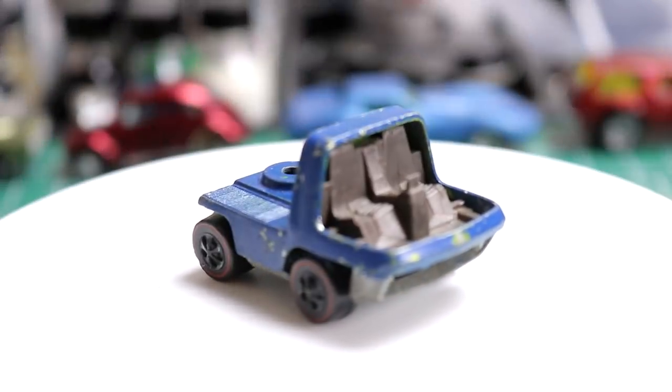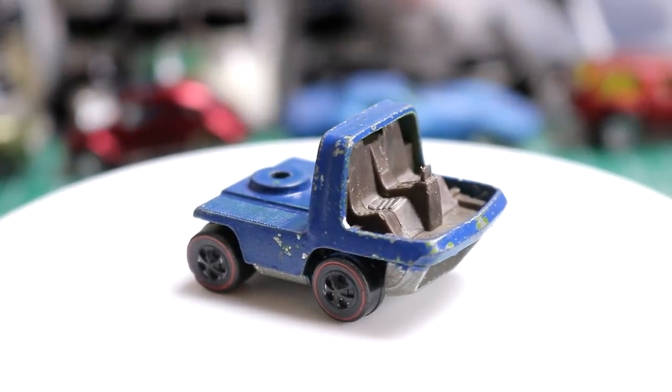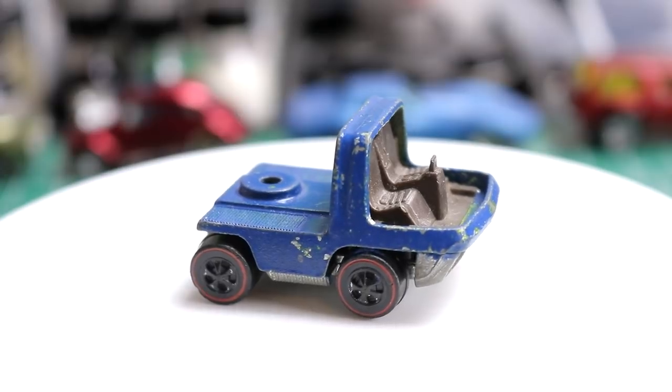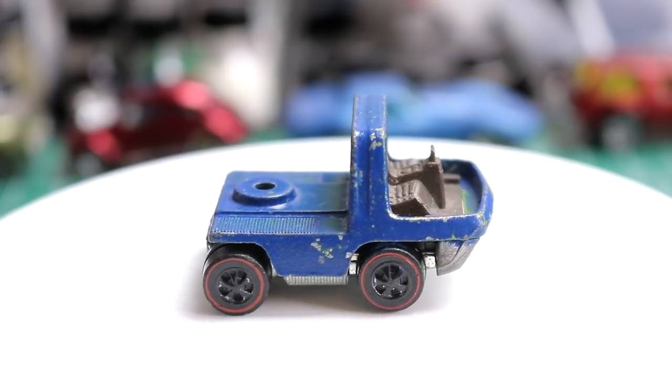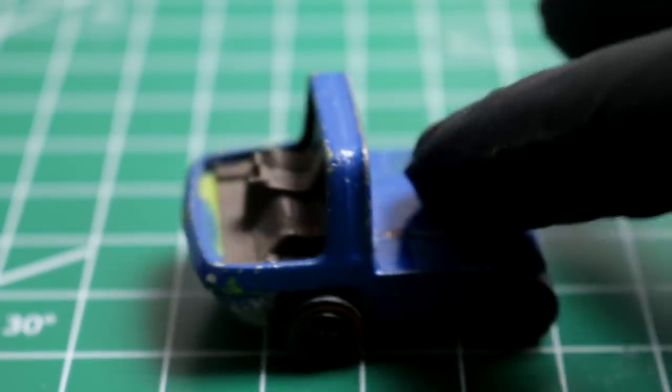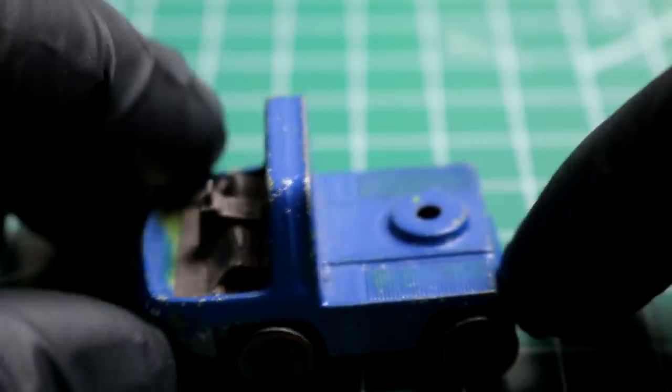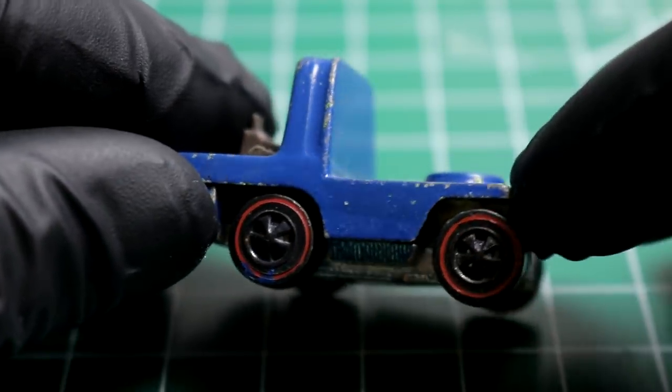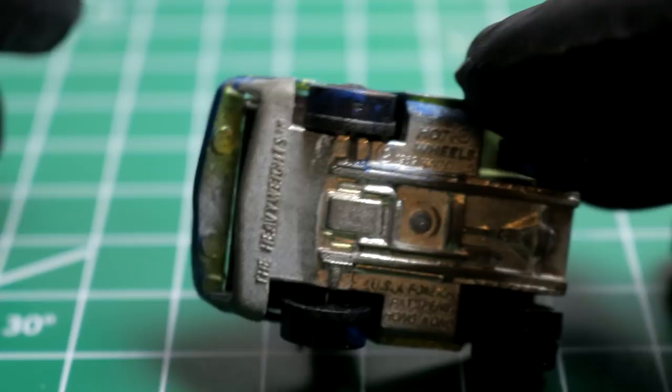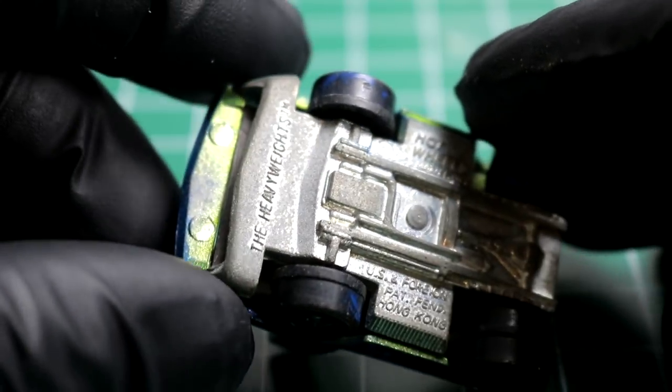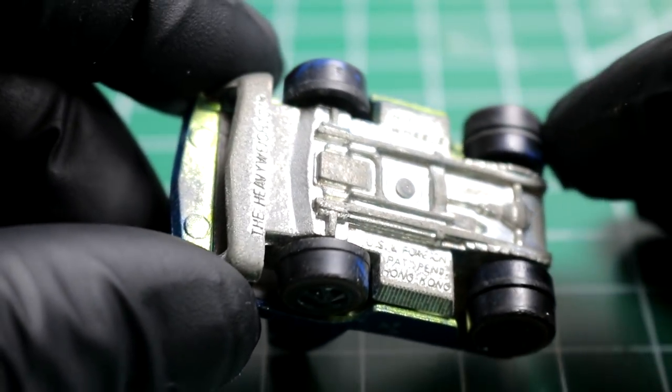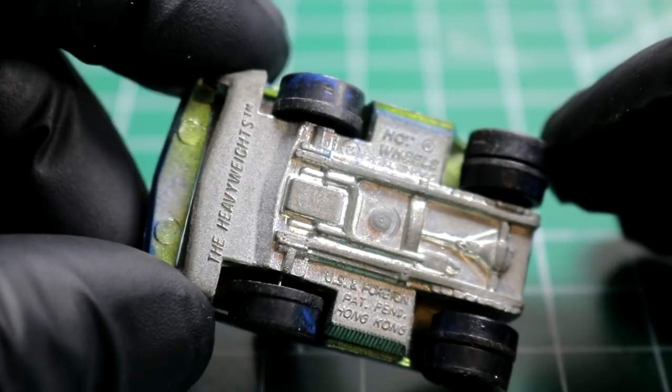Welcome back to Diecast Resurrection. This week we are working on my little favorite red line out of the bunch. It's very plain, it's very simple, but I like it. It looks like someone painted this one blue, so this is going to be mainly a respray video, and it should be an apple green spectra flame.